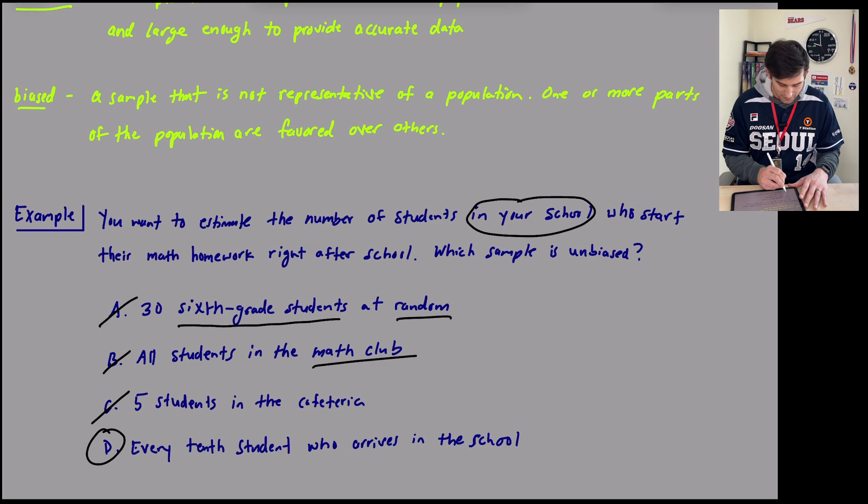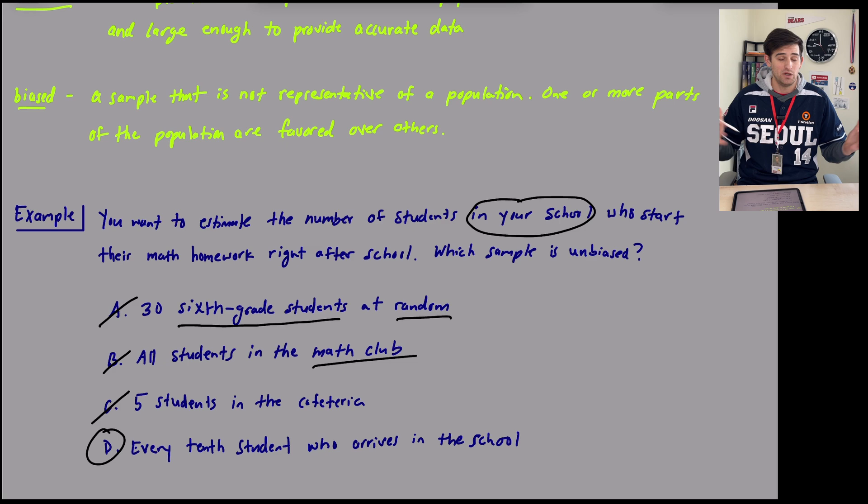And lastly, every 10th student who arrives in the school, that would be an unbiased sample. It's every 10th student. We don't know who's going to arrive to school at what time. So every 10th student should be as random as we could make it. And it's students who arrive at the school. We don't know once again what grade these students are in. So it's going to give us an accurate representation of our population. So that's a little bit about the difference between a biased and an unbiased sample.